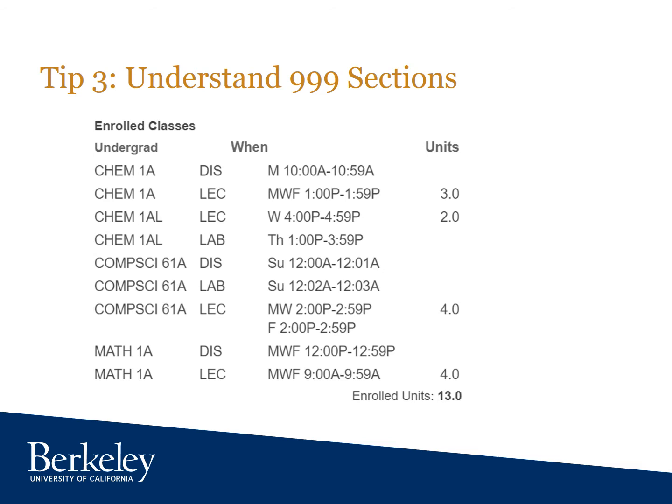Tip number three: understand 999 sections. This tip is also unique to EECS classes. Most classes at UC Berkeley consist of a lecture and related lab and/or discussion sections. By default, the enrollment system will only enroll you if there are open seats in all components of the class. It may be that the discussion or lab section you've selected has no space available, and that's why it pushes you to a waitlist even though you can see open seats at the lecture level.